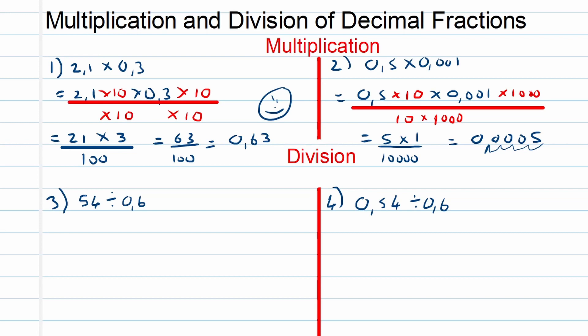Let's look at question number three: 54 divided by 0.6. Again, this is best if we write them as a fraction, a normal fraction. So we are going to say 54 over 0.6.